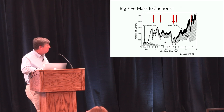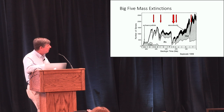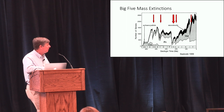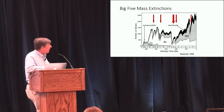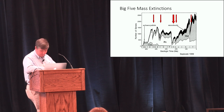Jack Sepkoski and Dave Raup worked for many years on the five canonical big extinctions, which are the largest divots you see here. The one you've probably heard the most about is the last one at the end of the Cretaceous, which includes the disappearance of the dinosaurs. But the interesting events are actually back here in the Paleozoic, and the one I'll talk about most is this big divot at the end of the Permian.